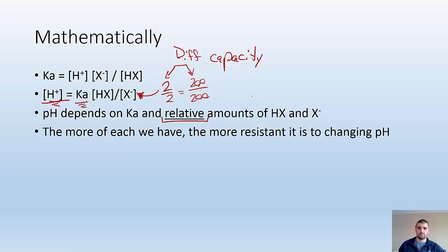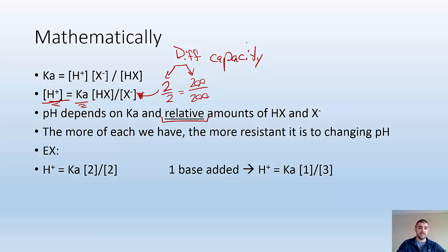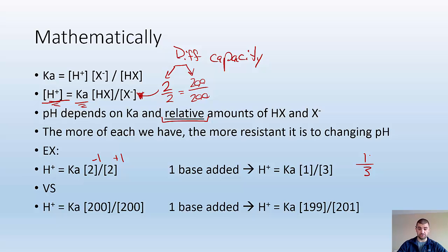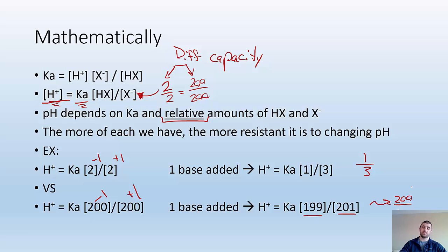Let me show you mathematically. Say my original setup has two Hx's and two x minuses, and I add one base. It's going to neutralize one of my acids — so minus one on top and plus one on the bottom — giving me one over three. Now say I had 200 of each and I add one base. I subtract one from my acid and add one to my base: 199 over 201, which is still almost equal to the same thing. That's how buffer capacity works.